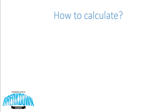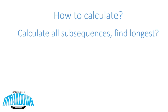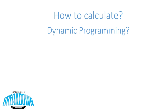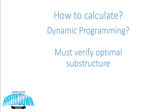But how would we calculate this? Similar to the edit distance problem, if there are strings of any reasonable length, we really can't do this mentally. We could calculate all of the subsequences and find the longest, but again, this is exponential. So instead, we can try to show that there exists a dynamic programming solution. As always, when considering dynamic programming, we must first verify that optimal substructure exists within the problem.